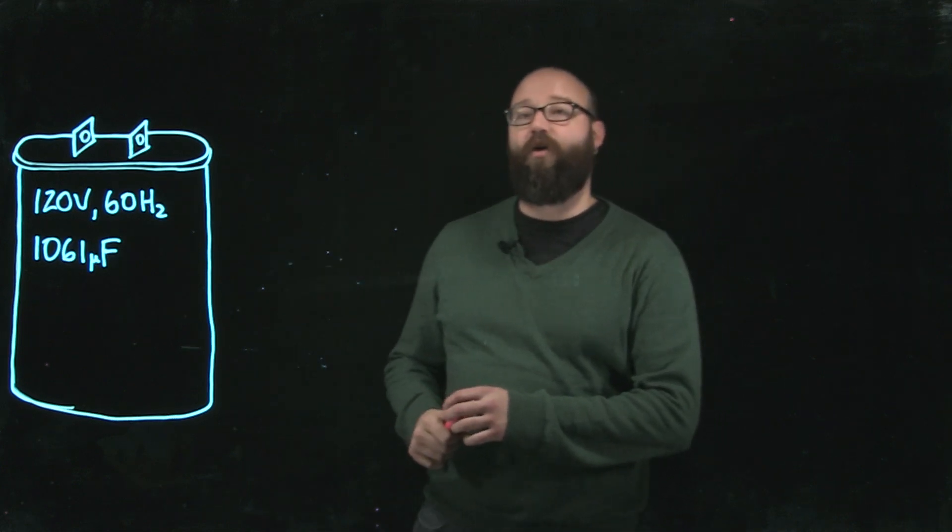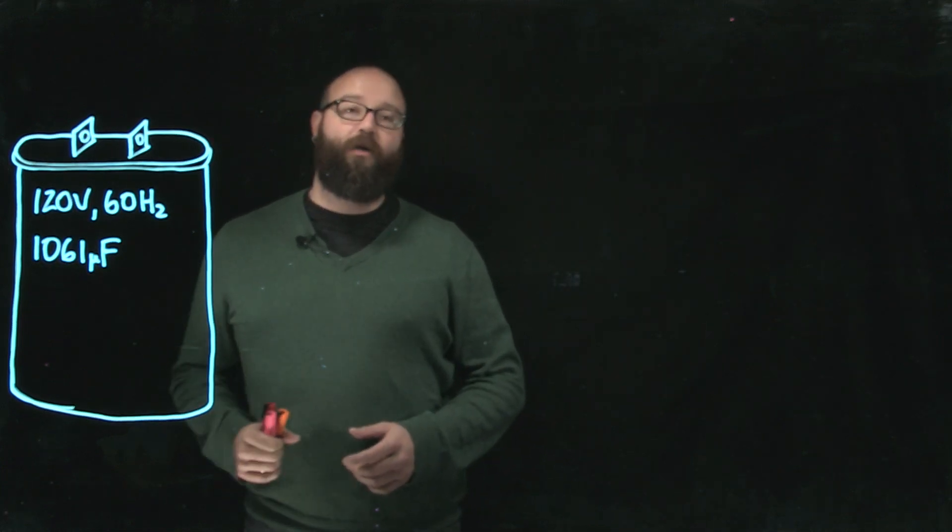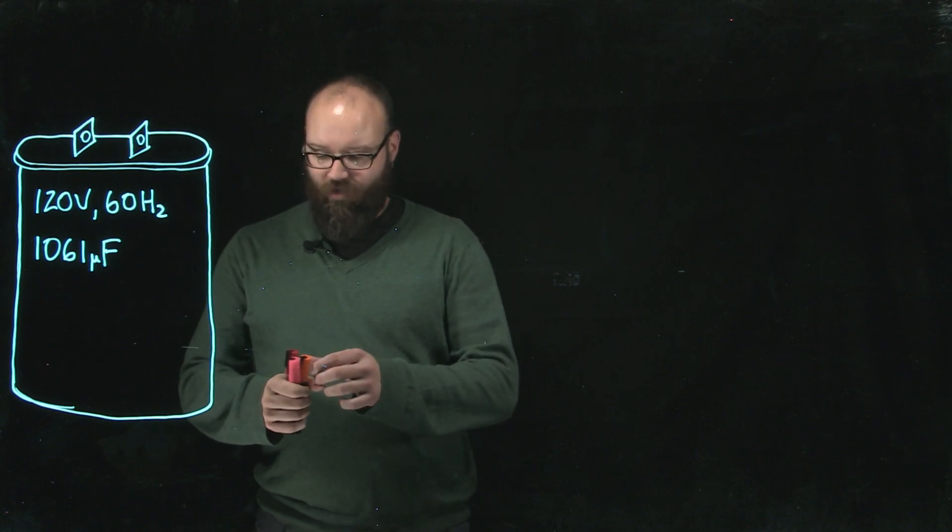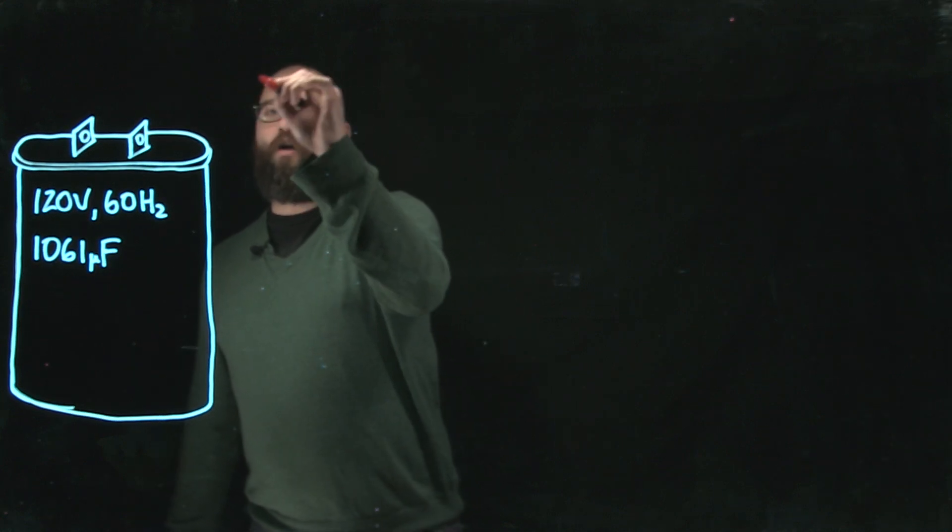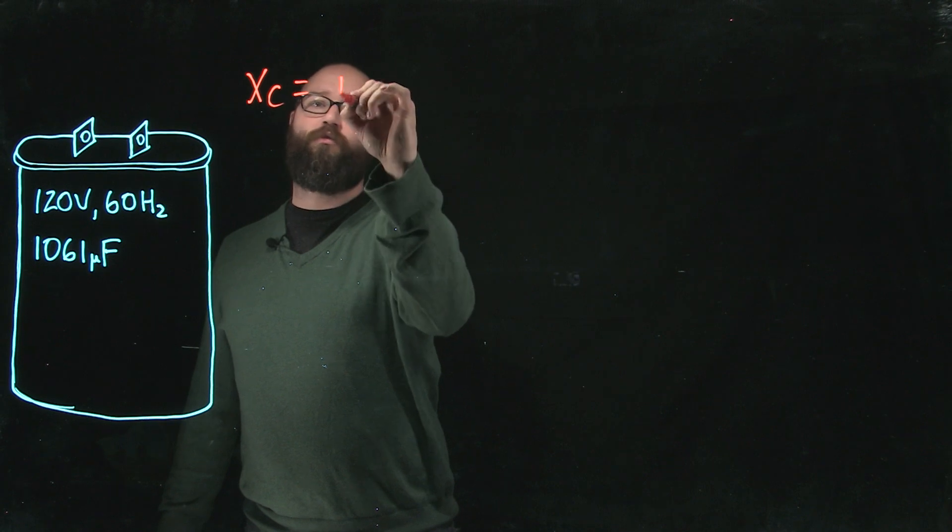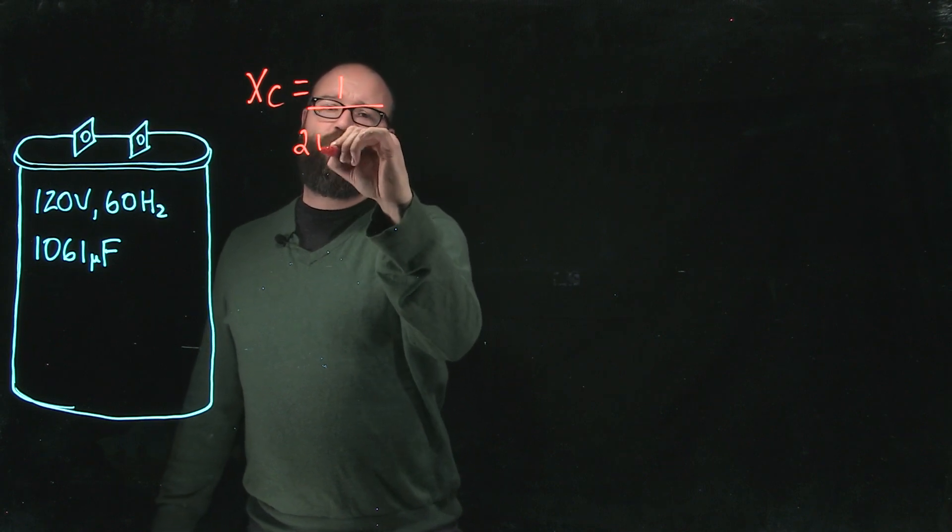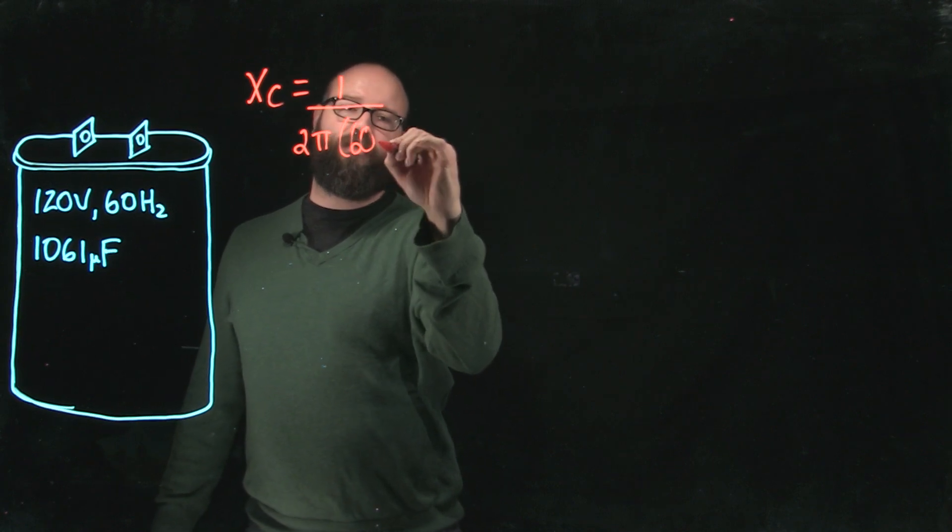So the first thing we need to do is figure out what is the capacitive reactance of this capacitor so we can use it in Ohm's law. We're going to take our Xc equals 1 over 2 pi. We're dealing with 60 hertz.